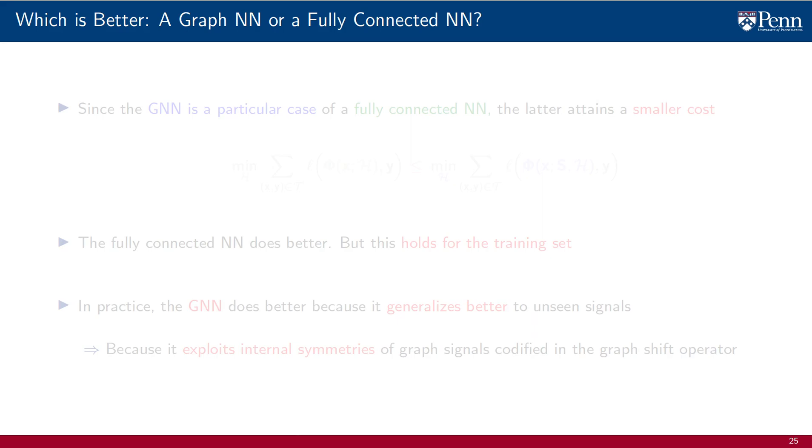An important question is which of these two architectures we expect to work better. The first important point to make is that the GNN is a particular case of a fully connected neural network, where we impose a particular structure on the linear map.